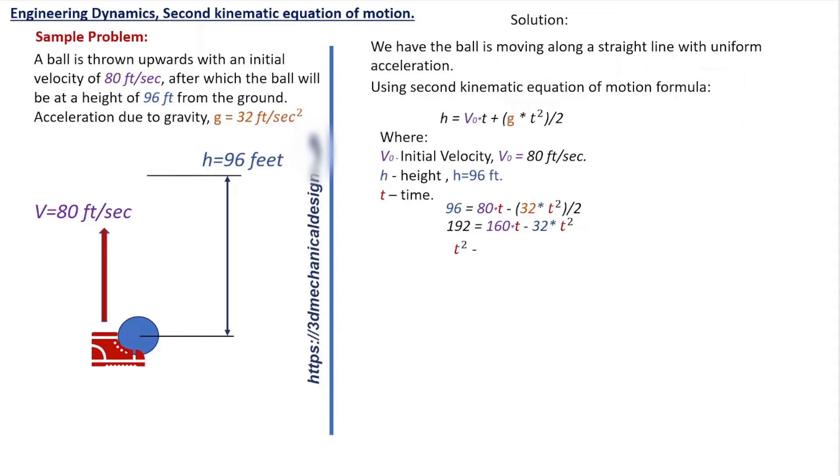T squared minus 5 times T plus 6 equals 0.